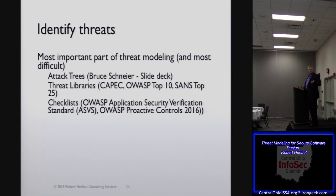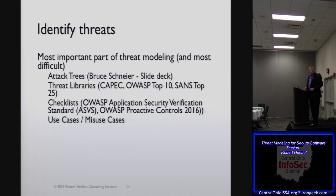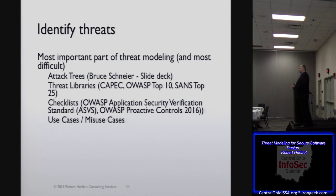I really like the ASVS from OWASP — a great tool of lists of questions about what is it in our system that we need to think about from a security standpoint, do we have it in place? And recently they just updated the Proactive Controls — 10 things that answer the OWASP Top 10; here are the things that developers need to think about when building systems. Use cases and misuse cases — a lot of times people focus on use cases, how do people use our system? We don't always think about misuse cases. I've talked to teams and they say, 'nobody would ever do that' — well, that's a misuse case. It's important to look at those as well.